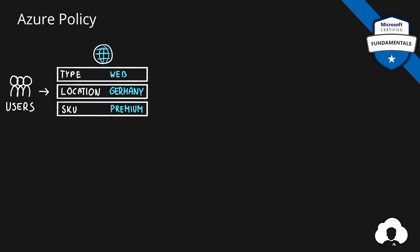We specify the type of the service that we want, let's say an app service which can host our web applications, a location which is also called Azure Region, in this case Germany, and other common properties for specific services, let's say SKU. When we choose all of those properties, we send a request to Azure. We do that through either Azure Portal or we can do it through Azure PowerShell, CLI, or any other tool of our choosing.